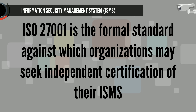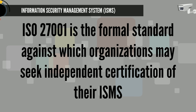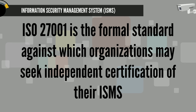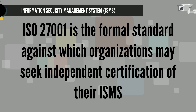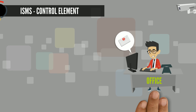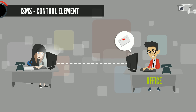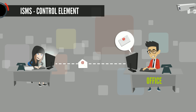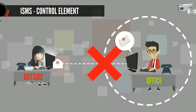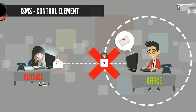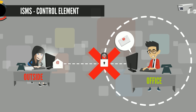The ISMS framework is used to design, implement, manage, maintain and enforce information security processes and controls systematically and consistently throughout the organization. The objective is to establish a management framework to initiate and manage information security in the organization, allocate responsibilities, and establish and control documentation.